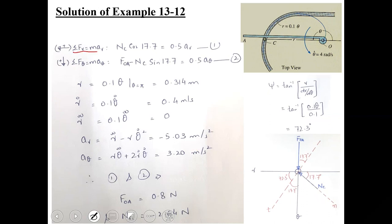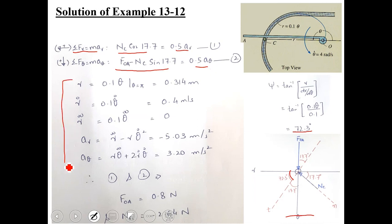Moving to kinematics: r = 0.1θ, so at θ = π, r = 0.314 m. Differentiating: Ṙ = 0.1θ̇. With θ̇ = 4 rad/s given, Ṙ = 0.4 m/s. Since the arm rotates at constant angular velocity, θ̇ is constant, so θ̈ = 0 and consequently R̈ = 0.